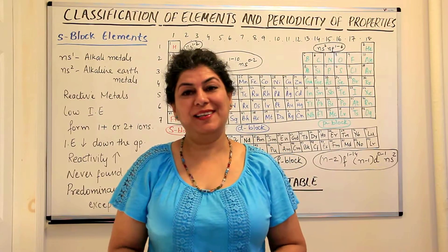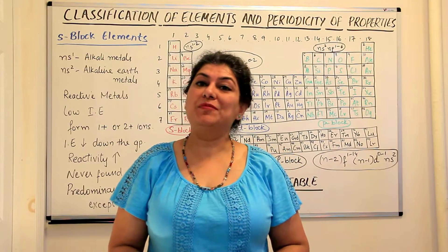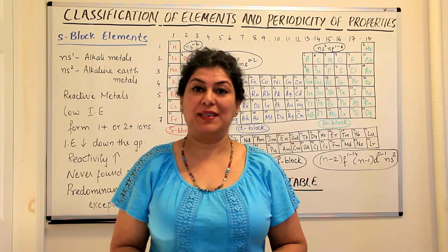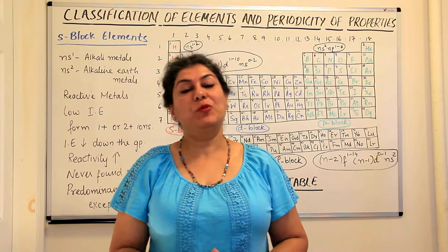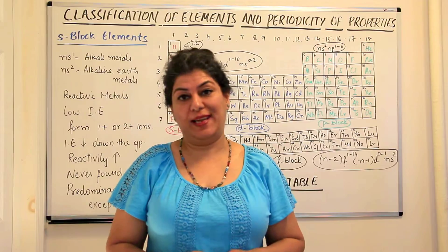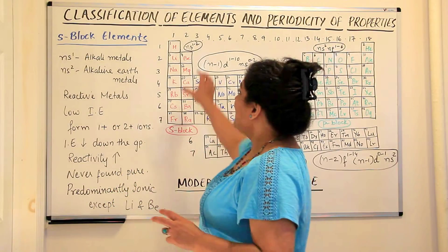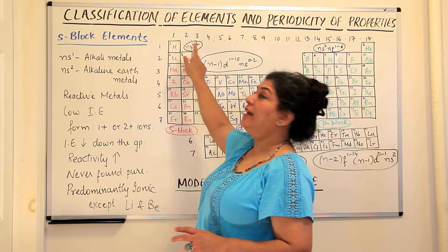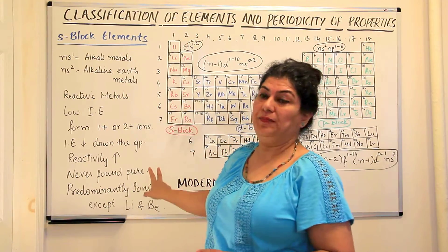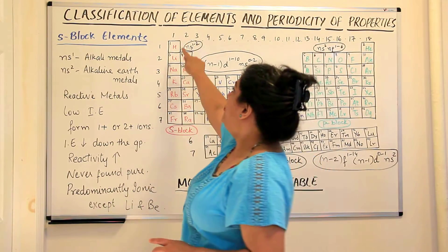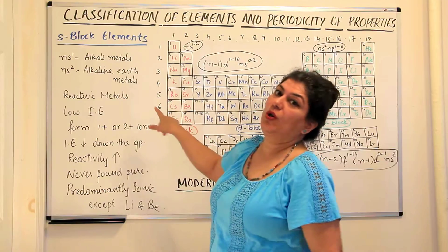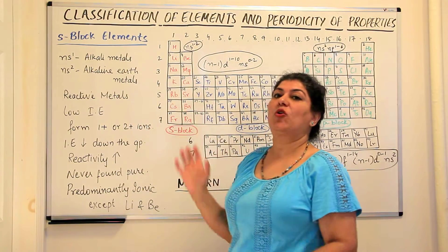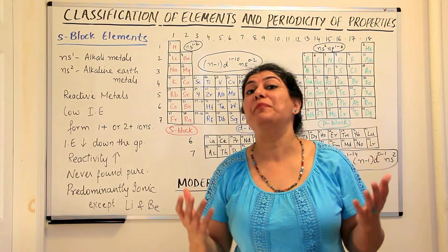Hello, I'm Seema and welcome to part 9 of the chapter periodic classification of elements. In this video I'm going to tell you about the S-block elements. The S-block elements are those elements which belong to group 1 and group 2 of the periodic table. The group 1 elements are also called the alkali metals and the group 2 metals are also called the alkaline earth metals.